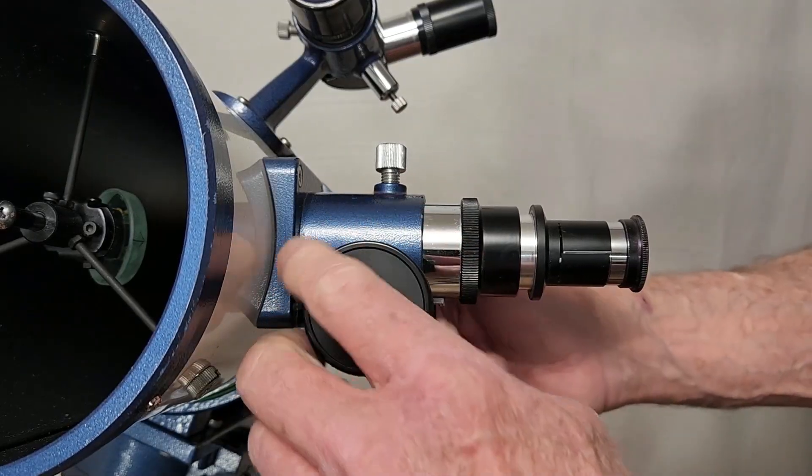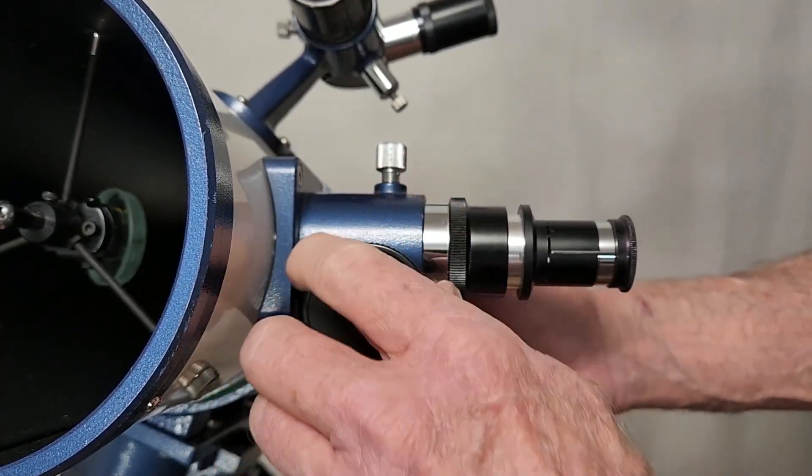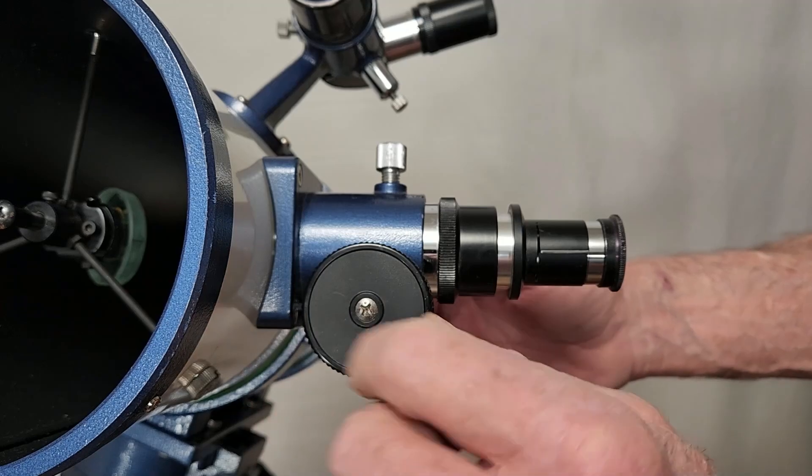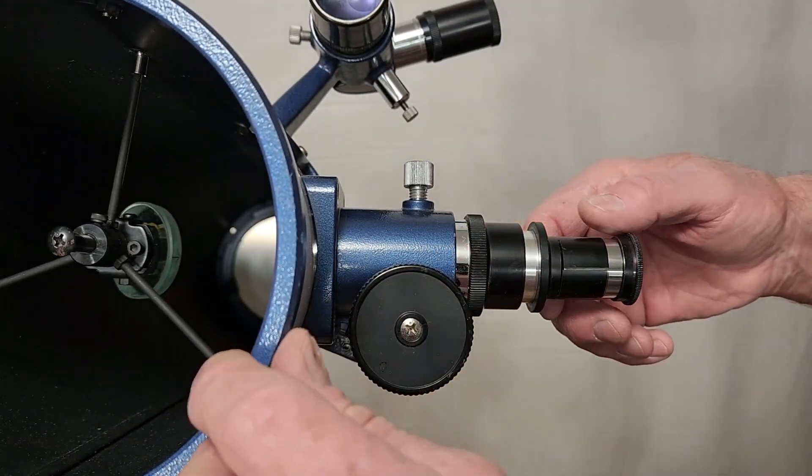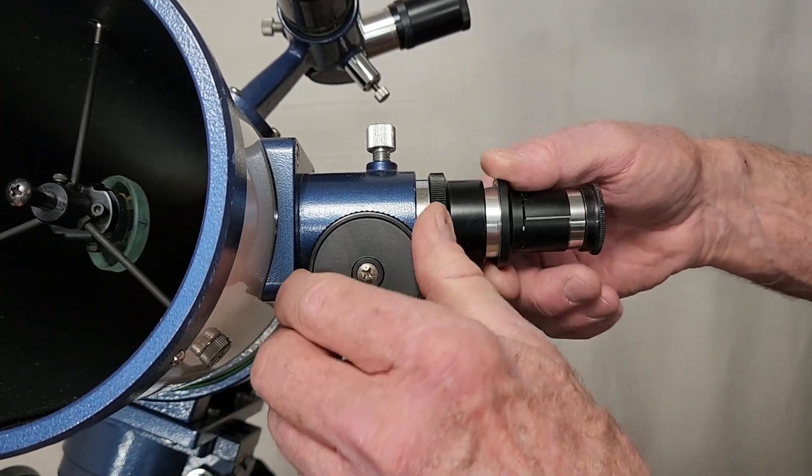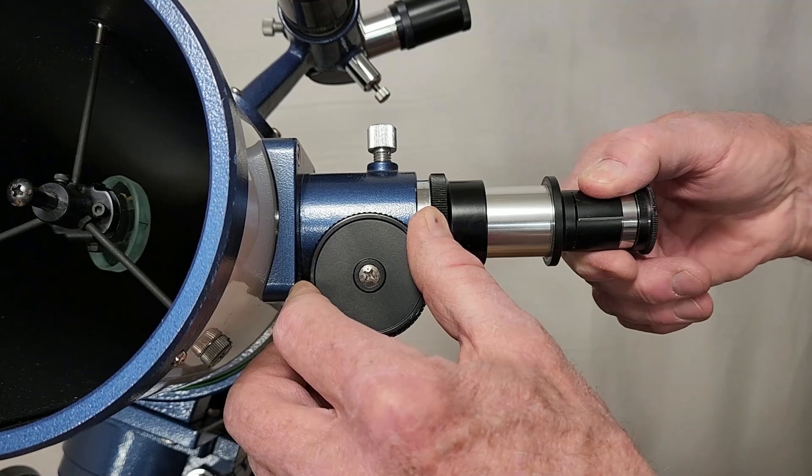The focus for this scope has a pretty short throw. It's just about maybe an inch and a half something like that. That's to prevent the tube, the draw tube, from interfering with the optics in the scope itself.